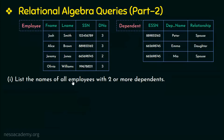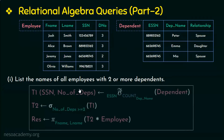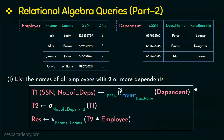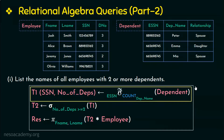The question asks for employees with two or more dependents, which means we need to count the number of dependents for each employee. For that we cannot use the basic relational algebra operations — we need to use the aggregate function, specifically the count aggregate function. The syntax is: first write the grouping attribute, followed by the aggregate function symbol, then the function list, and then the relation name on which we perform the aggregate function.